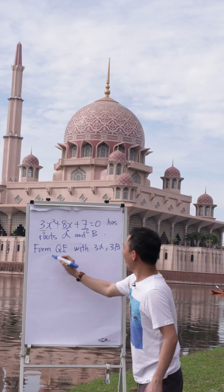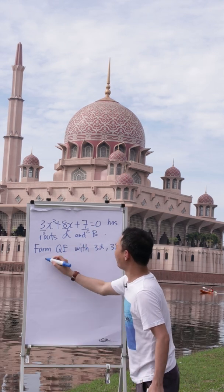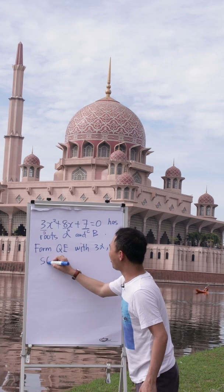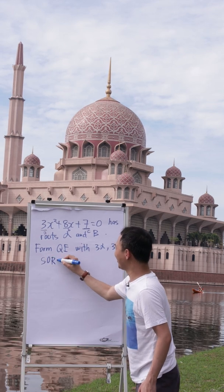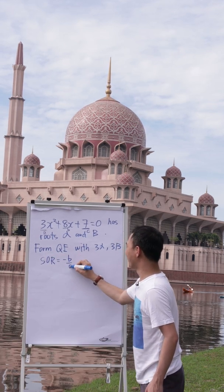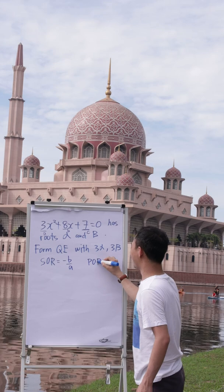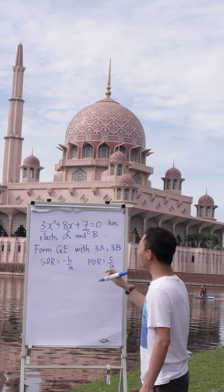We have a formula for sum of root. Sum of root is negative b over a, and product of root is basically c over a.